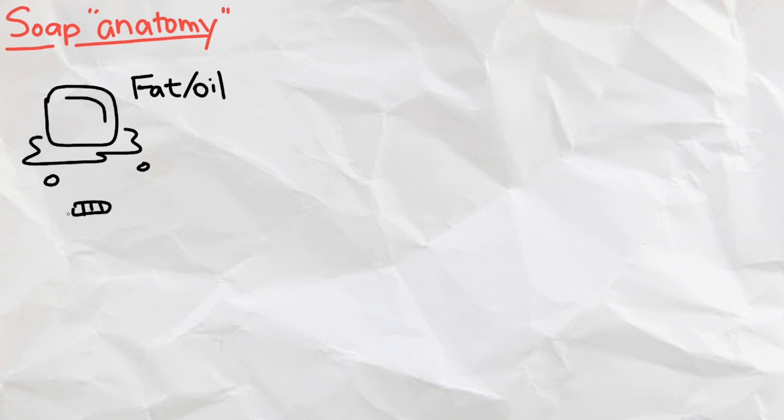Starting off with the anatomy of soap, it is made of fats from animals, plants, or minerals, and alkali, which are bases that neutralize acids.